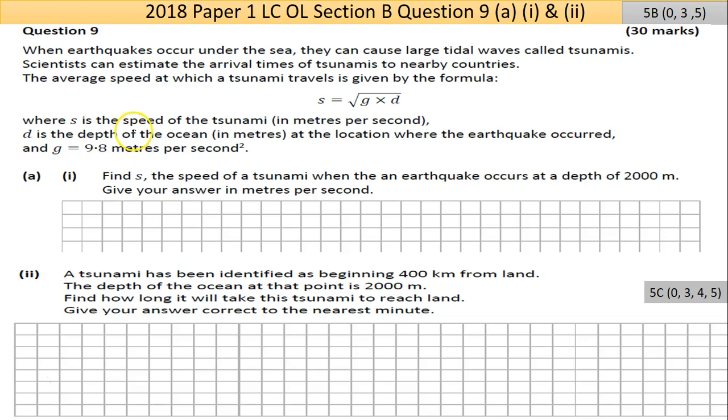They go through what the different three things mean, but very simply here, there's three variables to solve for. To find any unknown, you need to know the other two. Part A, part one here says find the speed of a tsunami when an earthquake occurs at a depth of 2,000 meters. Give your answer in meters per second.